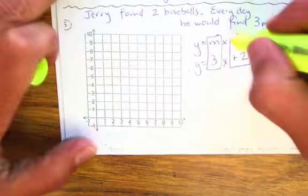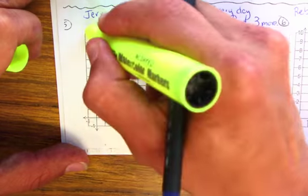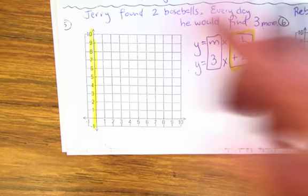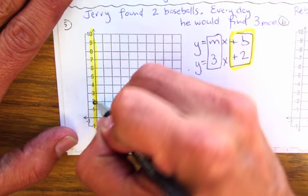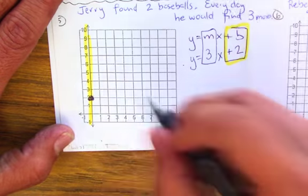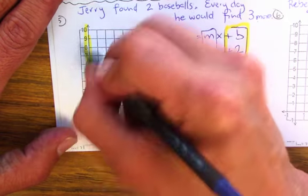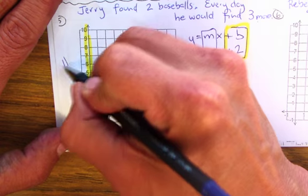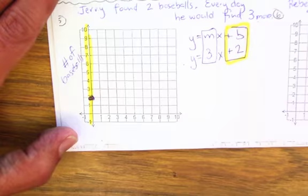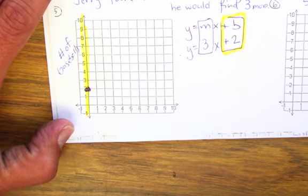So now to graph, I need my starting point. My starting point is 2. Positive 2. So here is my positive 2. So my starting point is 2. 2 what? 2 baseballs. So all these numbers here are the number of baseballs. Number of baseballs. Okay?